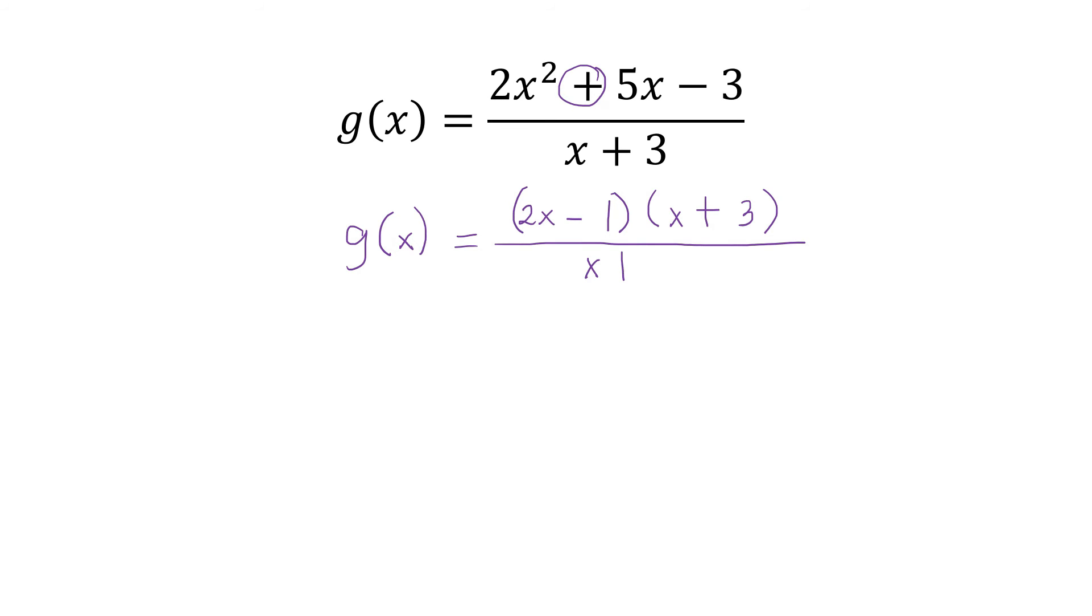Next, the denominator is x + 3. Then, we may cancel out this x + 3. So, what's left is g(x) = 2x - 1.